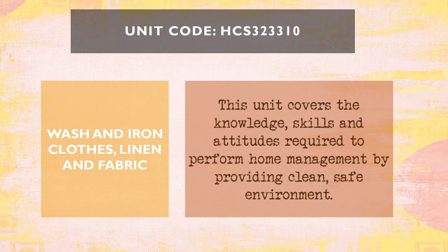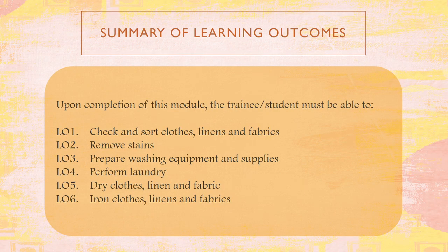Let's discuss the fourth competency from Part 2: wash and iron clothes, linen, and fabric. This unit covers the knowledge, skills, and attitudes required to perform home management by providing a clean and safe environment — not just the environment itself, but also the different things clients are wearing, bedsheets, and fabrics. You should know how to wash and iron certain things. The summary of learning outcomes includes: check and sort clothes, linen, and fabrics; remove stains; prepare washing equipment and supplies; perform laundry; dry clothes, linen, and fabric; iron clothes, linen, and fabrics.